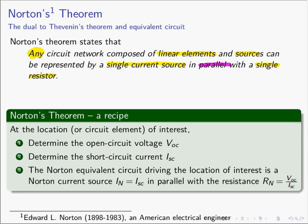To get started, Norton's Theorem looks just like Thevenin's Theorem. You take the circuit element of interest, remove it, open it, and find V_OC. Then take your circuit element of interest, short it out, and find the current that flows — I short circuit. You can then find the Norton equivalent circuit, which is a single current source with value I_SC in parallel with a single resistor whose value is V_OC over I_SC.